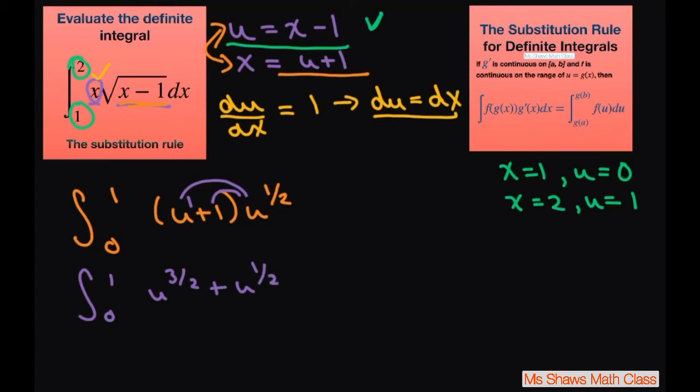Alright, now we can integrate. So this is going to be u to the 5 halves divided by 5 halves plus u to the 3 halves divided by 3 halves, and this is going to be from 0 to 1.